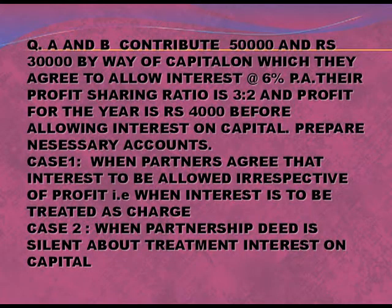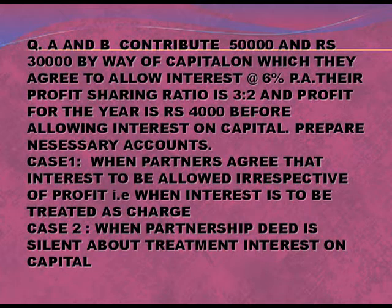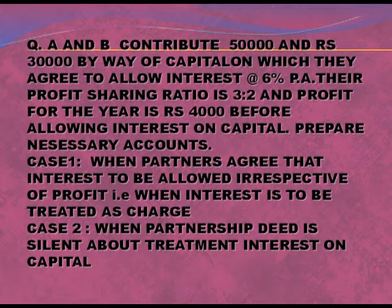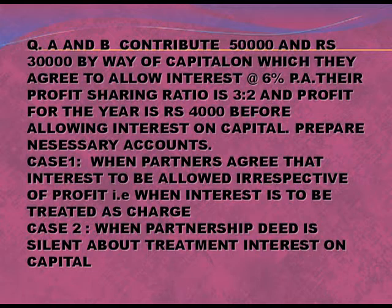Now let us take one example with two cases. A and B contribute 50,000 and 30,000 by way of capital, on which they agree to allow interest at the rate of 6% per annum. Their profit sharing ratio is 3:2 and profit for the year is 4,000 before allowing interest on capital. Case 1: when partners agree that interest is to be allowed irrespective of profit — that is, when interest is to be treated as a charge.